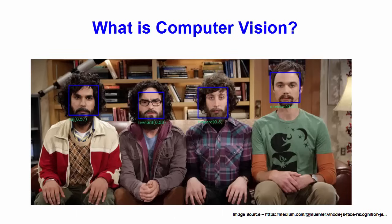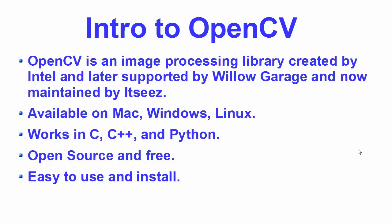Now let's see what is OpenCV. OpenCV, which stands for Open Source Computer Vision, is a library of programming functions mainly aimed at real-time computer vision.